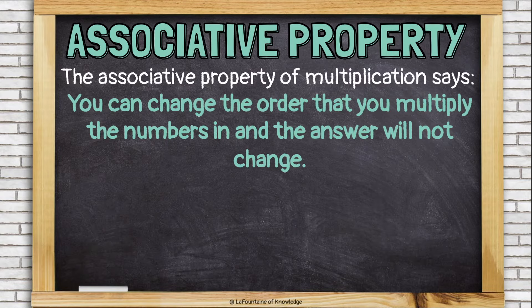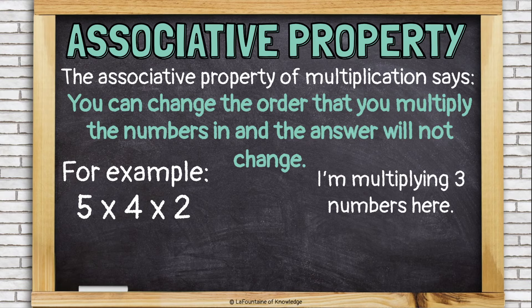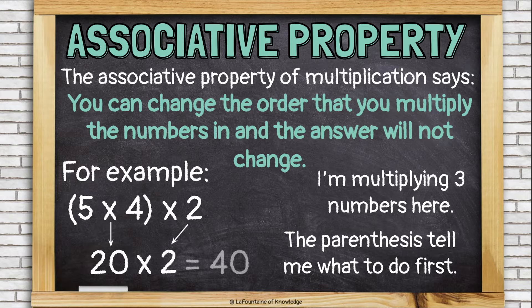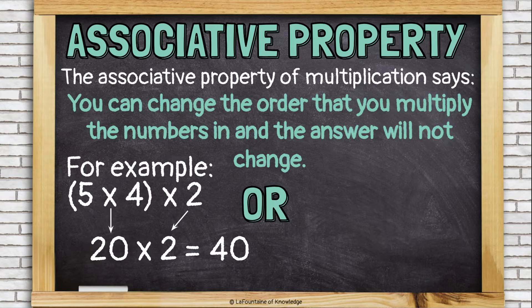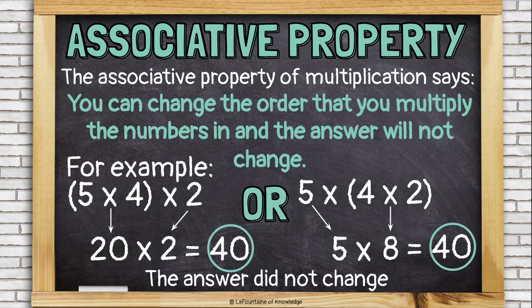The associative property of multiplication says you can change the order that you multiply the numbers in and the answer will not change. Let's take a look at an example: five times four times two. I'm multiplying three different numbers here — the parentheses tell me what to do first. So first I'm going to multiply five times four, that's 20, then multiply it by two and that equals 40. Or I could multiply four times two first — four times two is eight, and then multiply by five, and the answer is still 40. The answer did not change.